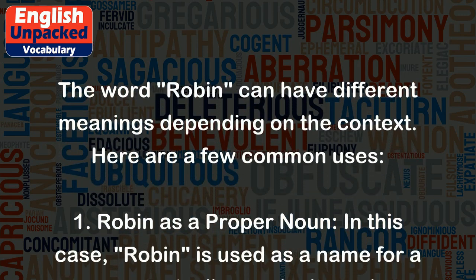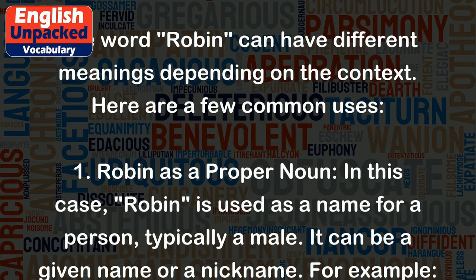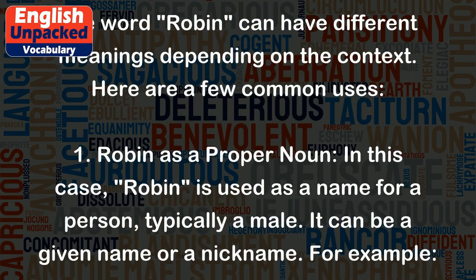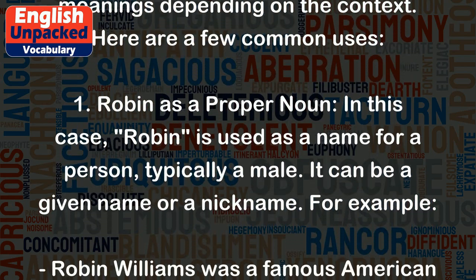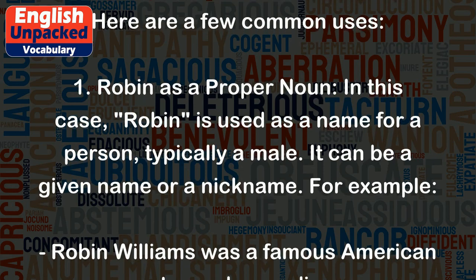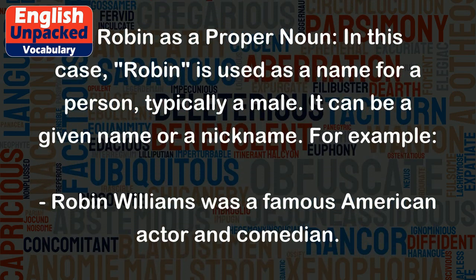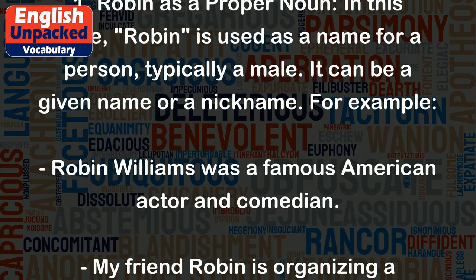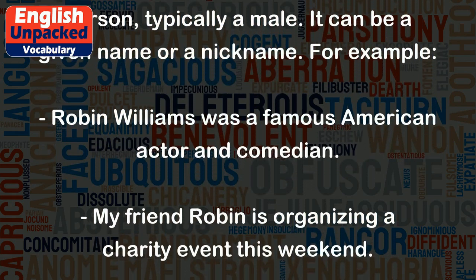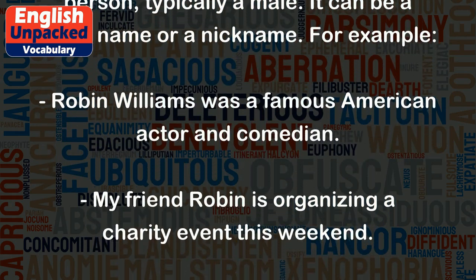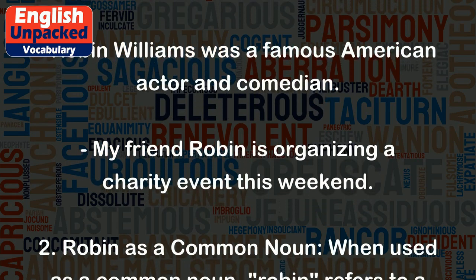1. Robin is a proper noun. In this case, Robin is used as a name for a person, typically a male. It can be a given name or a nickname. For example, Robin Williams was a famous American actor and comedian. My friend Robin is organizing a charity event this weekend.